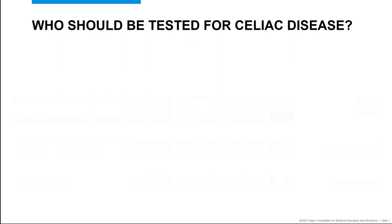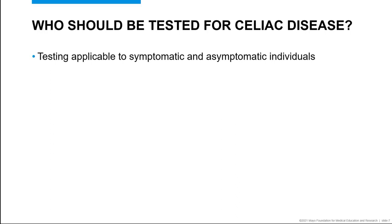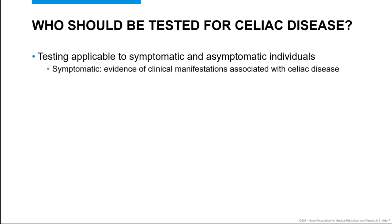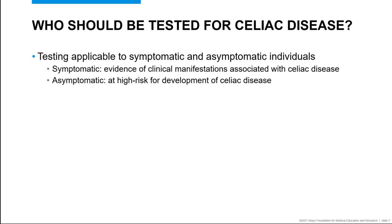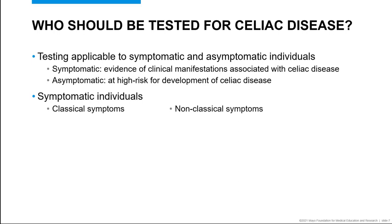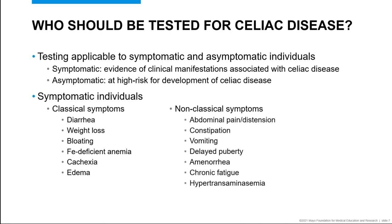The first aspect of testing considered by all the guidelines is who should be tested. There is agreement that testing is indicated for certain symptomatic and asymptomatic persons. Symptomatic patients are those who have evidence of clinical symptoms that could be associated with celiac disease, while asymptomatic individuals are those with no appreciable clinical symptoms but at higher risk for developing celiac disease compared to the general population. Most guidelines consider both classical and non-classical manifestations. Most guidelines include diarrhea, weight loss, bloating, iron deficient anemia, cachexia, and edema as classical symptoms, while non-classical symptoms include abdominal pain and distension, constipation, vomiting, delayed puberty, amenorrhea, chronic fatigue, and hypertransaminasemia. Elevated liver enzymes is highlighted by several guidelines as one of the more common incidental lab findings which should prompt an evaluation for undiagnosed celiac disease.